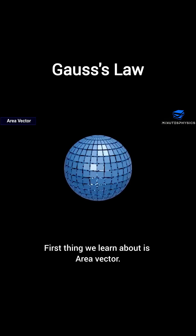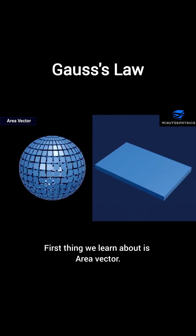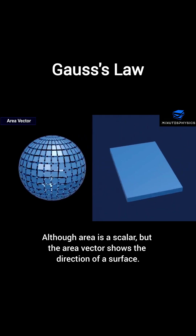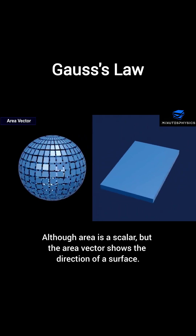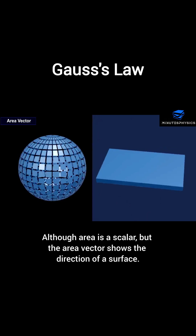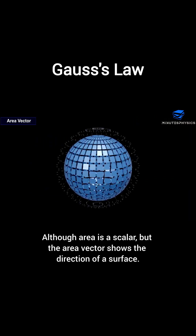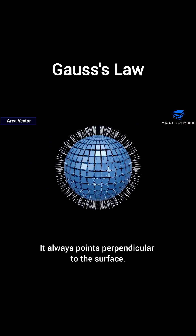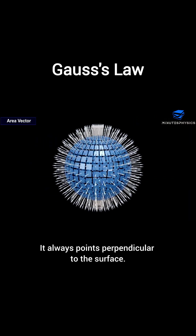The first thing we learn about is the area vector. Although area is a scalar, the area vector shows the direction of a surface. It always points perpendicular to the surface.